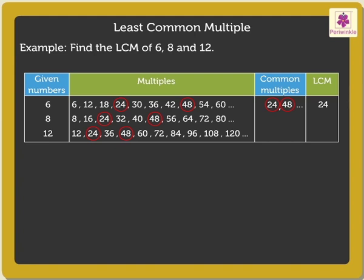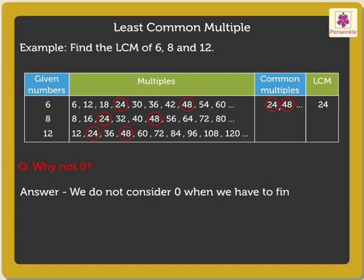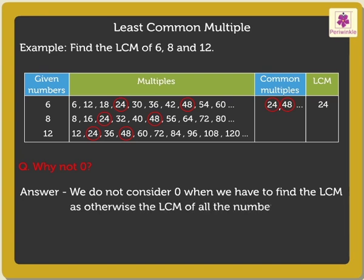Now, kids, you must be wondering why we did not list 0 as a multiple for any of the numbers. That is because we did not consider 0 when finding the LCM, as otherwise the LCM of all the numbers would always be 0.